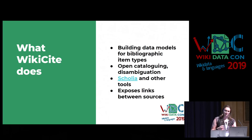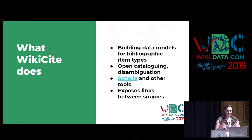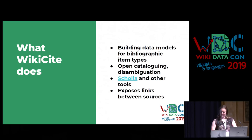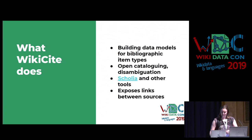So what are we doing in WikiCite with all of these citations? It's not just about collecting them, it's about using them. It creates so many opportunities for new projects. One of the things you can do with this data is build data models for bibliographic item types, which should be exciting for people into schemas. You can also do open cataloging and disambiguation. People are also building visualization tools on top of this, such as Scolia. WikiCite is a good way to figure out how sources link together.